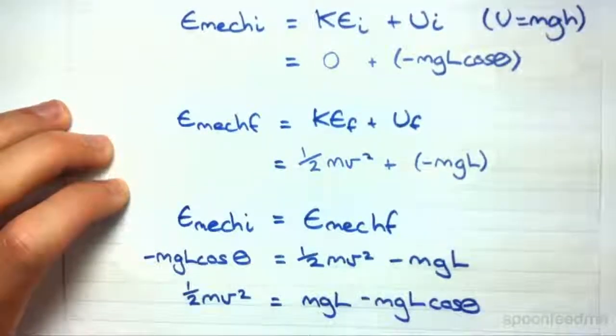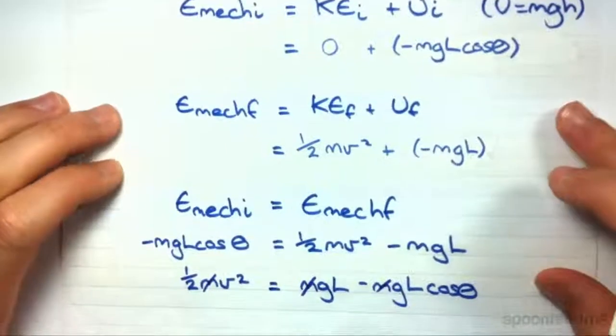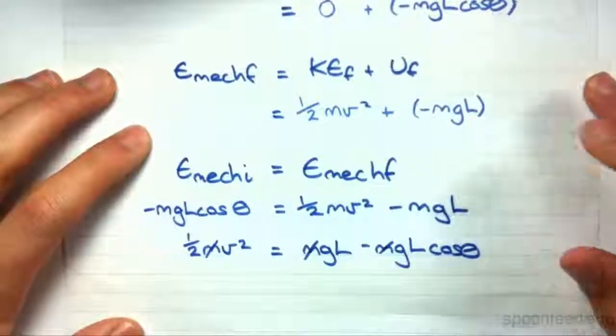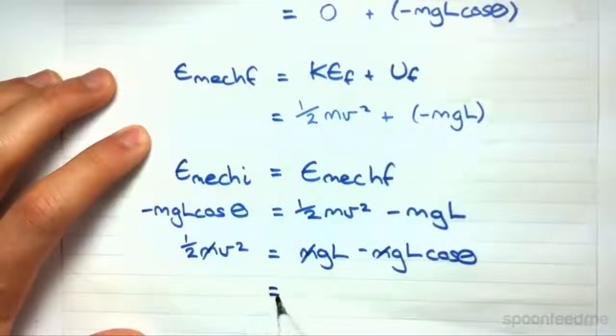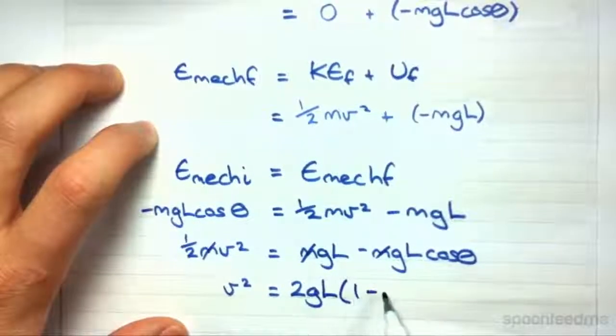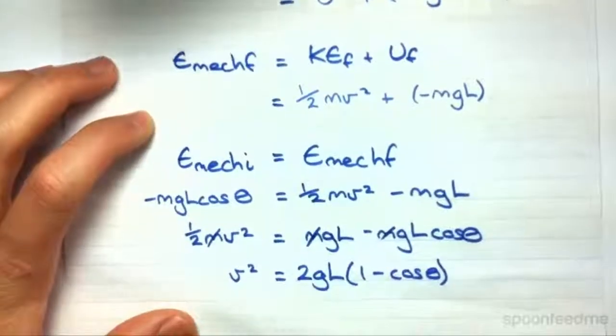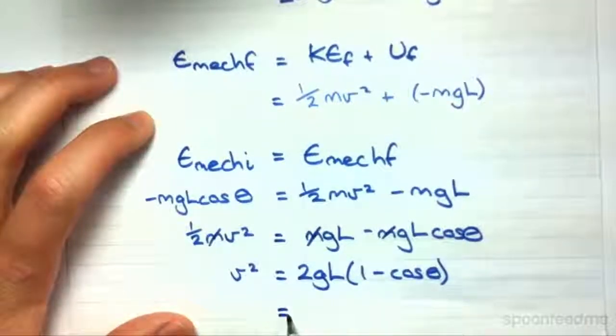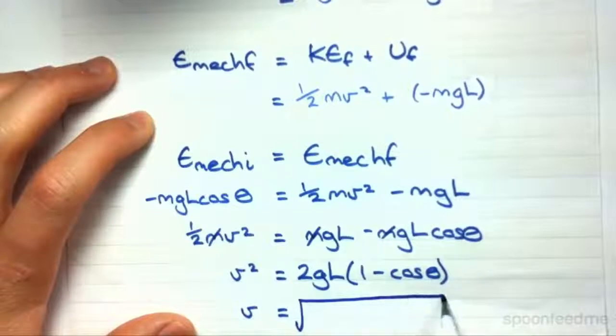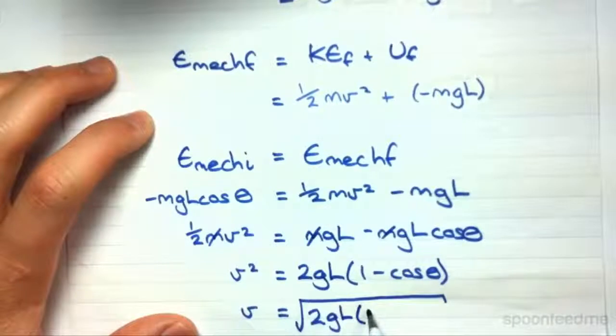And we end up with mg L minus mg L cos theta. Now you notice that everything is times m, so if we divide both sides by m, these all disappear. We then can times both sides by 2, we end up with v squared over here. And I'm going to just take out a common factor of GL, and I end up with that. And finally I can take the square root, and we end up with v at the bottom equals square root of 2 GL times 1 minus cos theta.